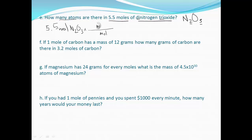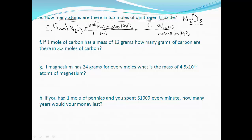We want molecules of dinitrogen trioxide in the numerator. The reason we want molecules — even though the question asks for atoms — is that since it contains more than one element, it's a molecule. So one mole contains 6.02 times 10 to the 23rd molecules. Now to get to atoms, we need to get rid of molecules. We have two nitrogens and three oxygens, so there are five atoms total in this molecule. So we say five atoms per one molecule of N2O3 — moles cancel, molecules cancel, and atoms is our last unit.